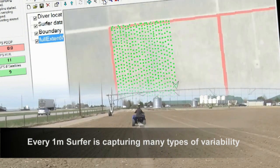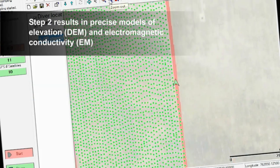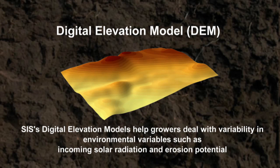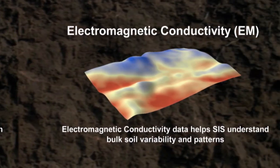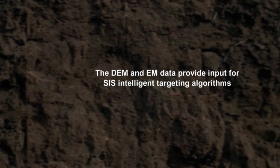Concurrently, the Data Acquisition Analysis System is processing this information in preparation for the next step. The field's topography is displayed through the digital elevation model and is useful in managing solar radiation variability and erosion potential. The SIS also collects electromagnetic conductivity data to provide a better understanding of soil bulk variability and patterns.